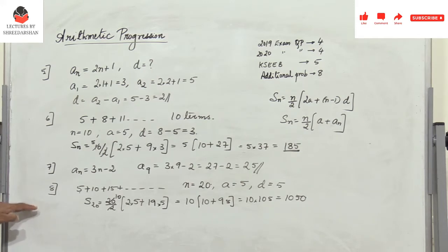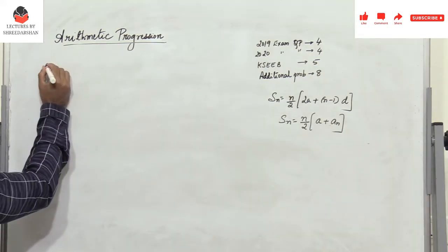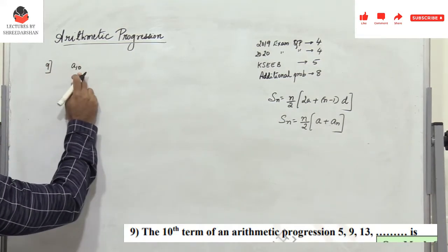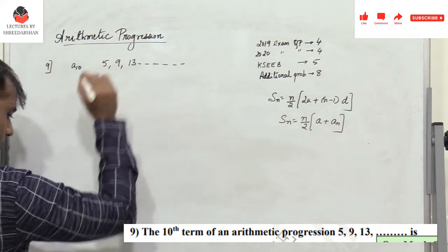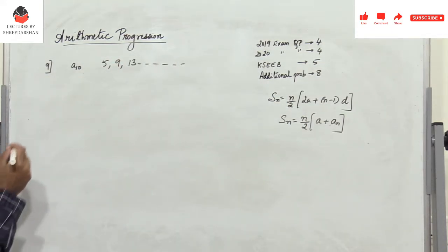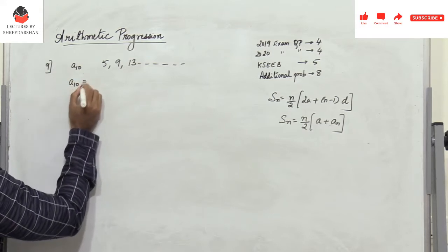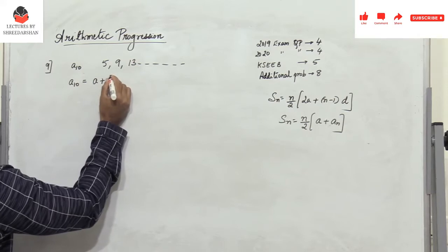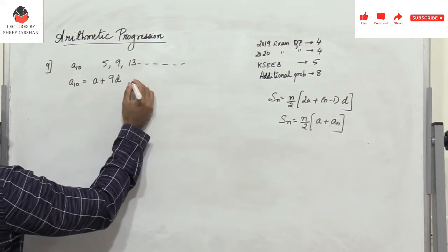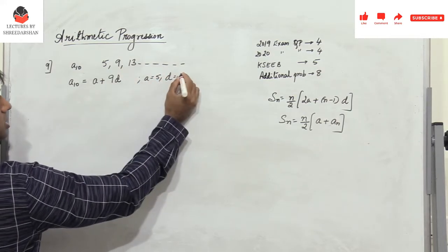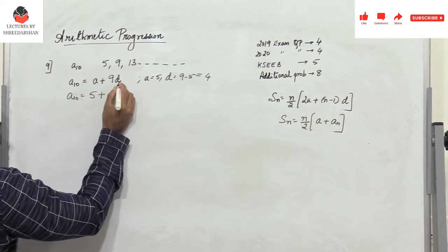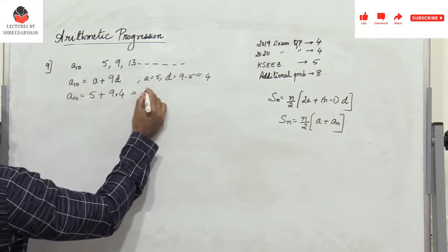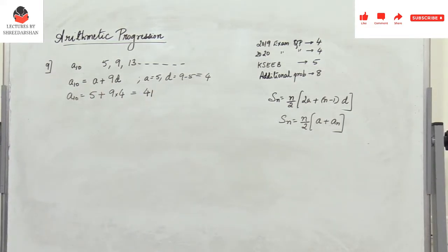Now moving to questions from the model paper. Find the 10th term a₁₀ of the arithmetic progression 5, 9, 13, ... Using aₙ = a + (n-1)d: a₁₀ = 5 + 9 × 4, since a = 5 and d = 9 - 5 = 4. That gives 5 + 36 = 41. This is a one-mark problem.